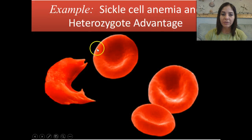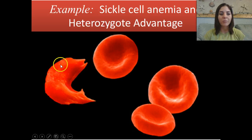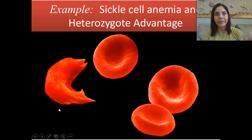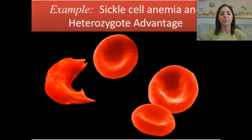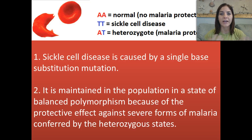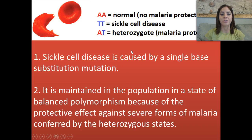This is a sickle cell. Our normal blood cells look like little discs, and this is a sickle cell. People that are homozygous for the sickle cell trait are going to have a lot of problems — they're going to be very sick and can get blood clots very easily. Big A, big A is the normal blood genotype, and it gives no protection against malaria. Big T, big T is sickle cell disease, and most people who are homozygous for it will die at a younger age. Then we have the heterozygote, big A, big T, which gives some type of malaria protection.